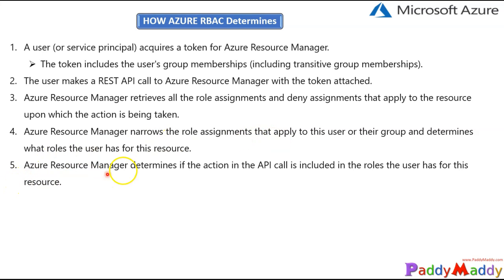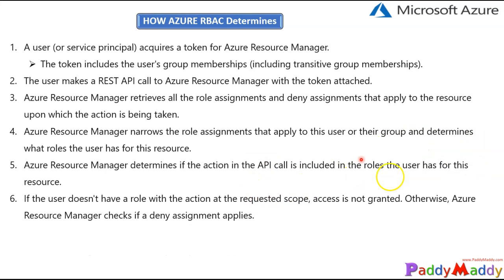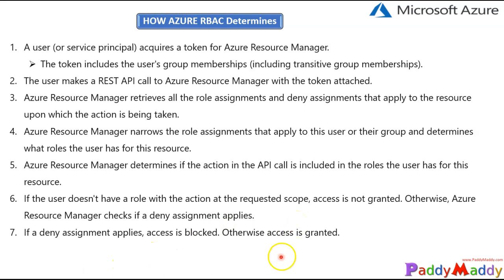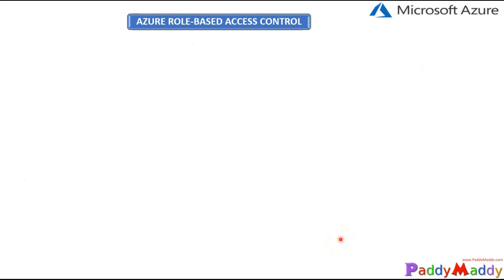Azure Resource Manager then determines if the action in the API call is included in the roles the user has for that resource. If it is the exact resource with the right role, access is granted. If the user doesn't have the role with the action for the requested scope, access is not granted. Otherwise, the system checks for the DENY assignment policy — if a DENY assignment policy exists, it will simply say you don't have permission. That's how it works — it blocks access, or if the user has access for that area, the access is granted.